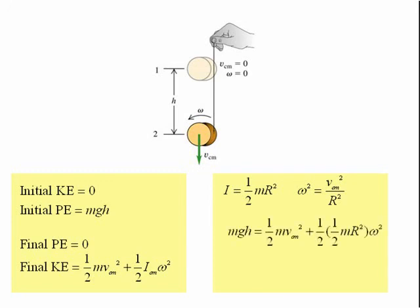The final mechanical energy is ½mvcm² plus ½ of ½mr² times the velocity of the center of mass squared divided by r squared, the radius of the yoyo squared.